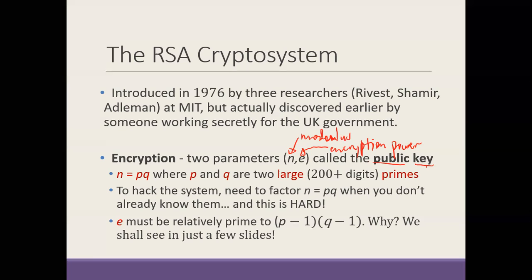So what is n? N is the product of two massive primes. In most implementations of RSA, p and q are just highly likely to be prime. The list of primes is infinite — that's what Euclid proved — but there's only a finite list of known primes. It would be a bad idea to implement an RSA system using two primes that are known to everybody on that finite list, because a hacker could simply go in with the same list and figure out your primes.